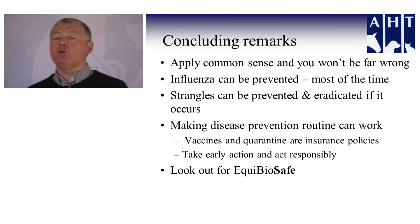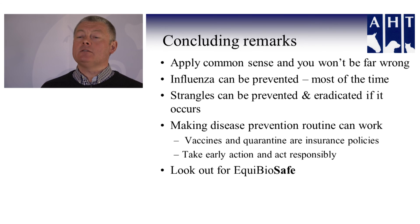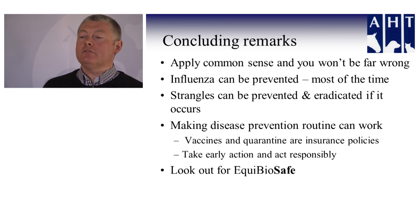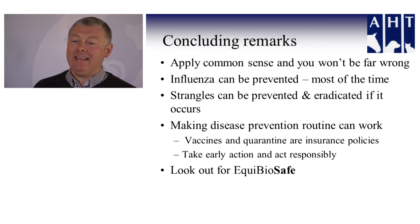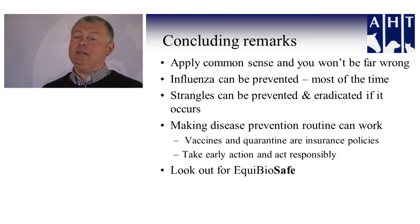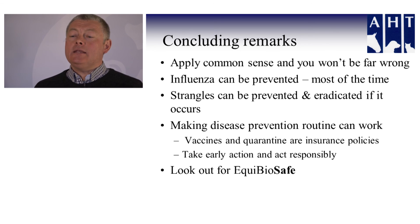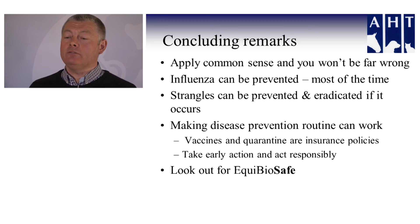Finally, I just want to conclude. It's really important that common sense is applied and if you do that you won't be going far wrong. Influenza can be prevented most of the time — do consider vaccination. Strangles similarly can be prevented and eradicated if it occurs — it's not the scourge people think it is if managed properly. EHV-1 is endemic — we are not going to eradicate it, it needs to be managed responsibly and people need to be aware of what to do when it occurs. Making disease prevention part of your routine can work. Consider vaccines and quarantine as insurance policies and invest in them. Be prepared to take early action and always act responsibly. Please look out for EquiBioSafe — it's there and it will help you.